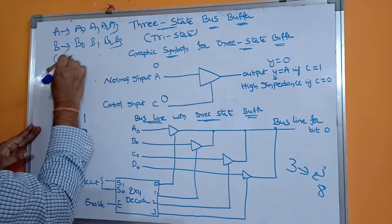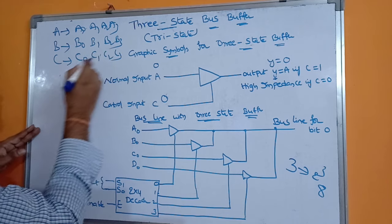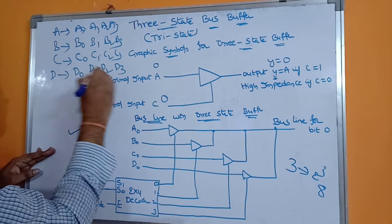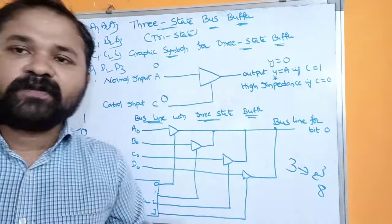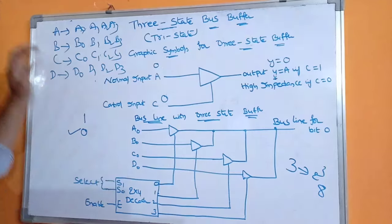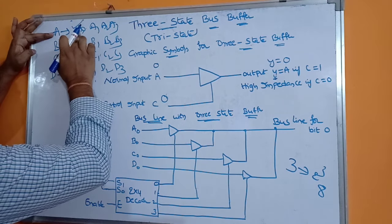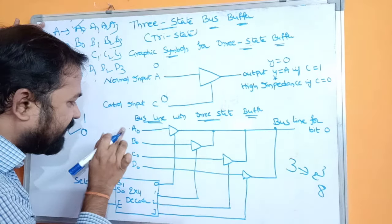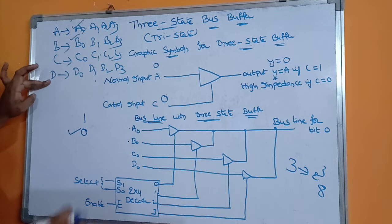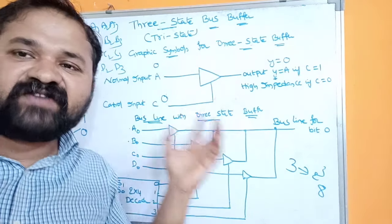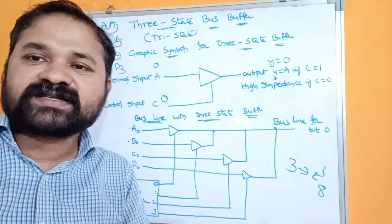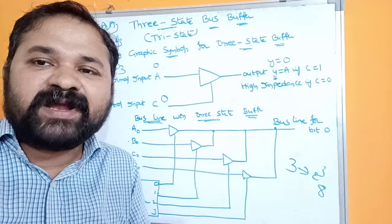Register B has bits B0, B1, B2, B3; register C has bits C0, C1, C2, C3; and register D has bits D0, D1, D2, D3. We take only the first bit from each register — A0, B0, C0, D0 — because implementing the full diagram for all bits would become complex. This same structure can be extended for all bits of each register.